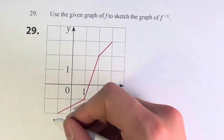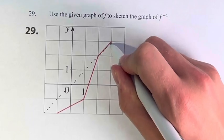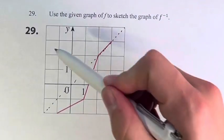So what we do here is we draw the line in, y equals x. Because we know that the inverse is going to have to be reflected over that line.